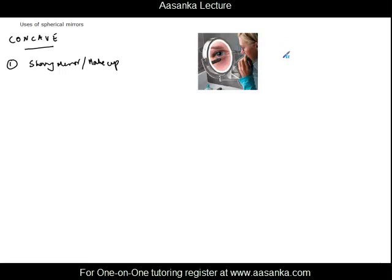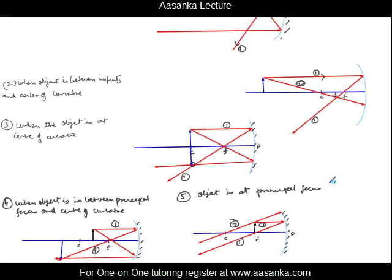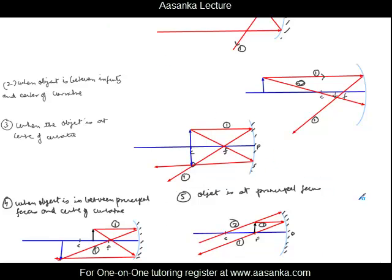The second use of a concave mirror is as a reflector in car headlights. In car headlights you want rays to travel a large distance so that while driving you can see objects far off. The bulb is placed at the focus, light rays move towards the mirror, and after reflection they become parallel to each other. When the object is at the principal focus, rays become parallel after reflection — this is the logic behind this use.